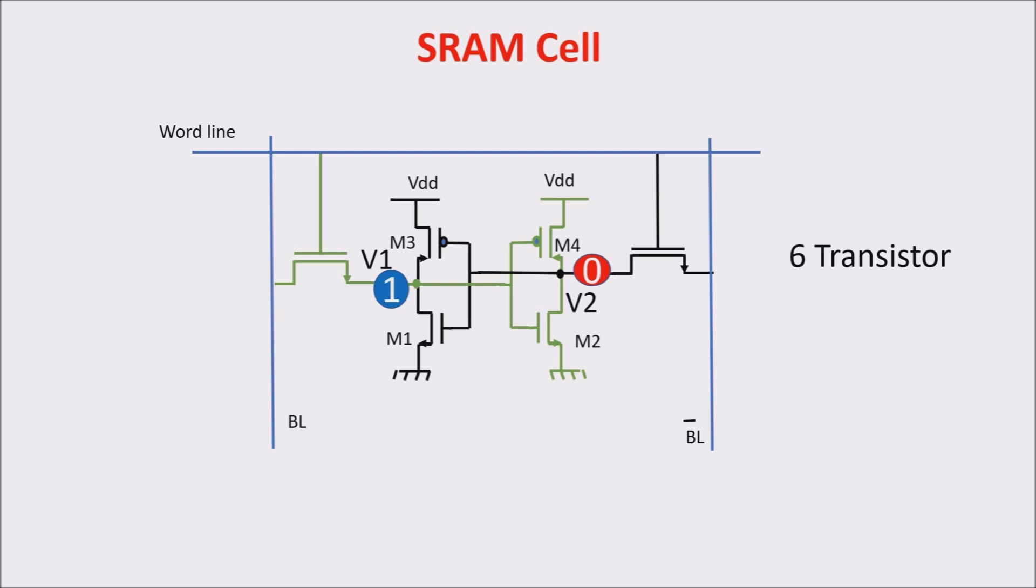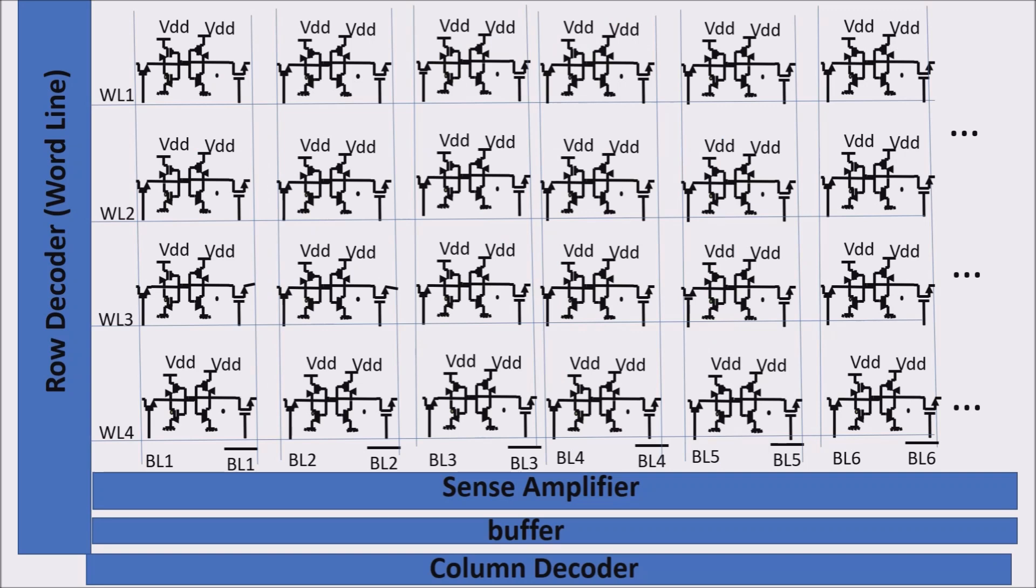The transistors composing the latch are as small as possible to save space on the chip. So, in the read and write operations, they have to be helped to fasten the process, because the bit line capacitance slows down the operations. Since we need a lot of cells, bit line could be quite long, thus increasing its capacitance, and slowing down the read and write operations. For this reason, we need something called sense amplifier to fasten the process.